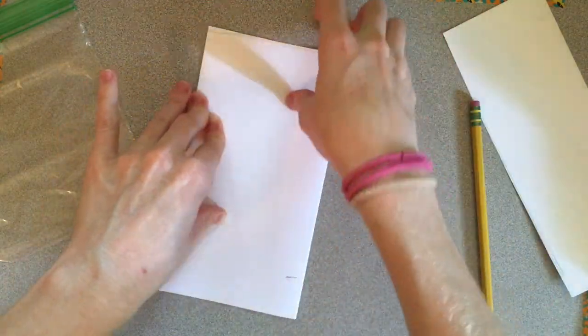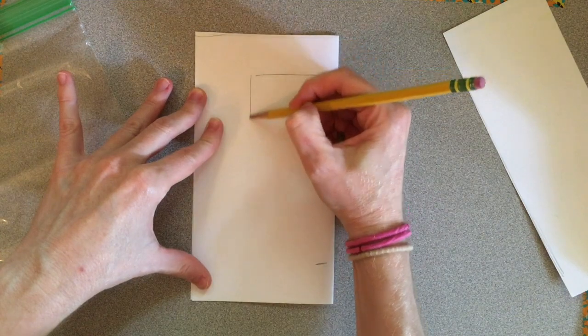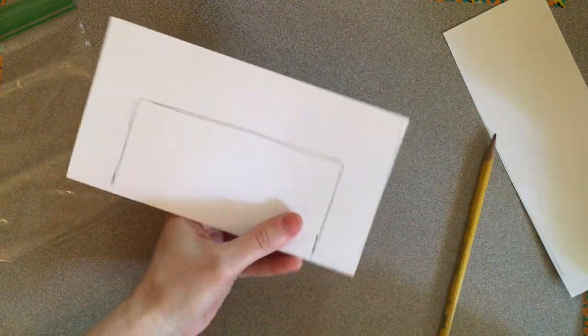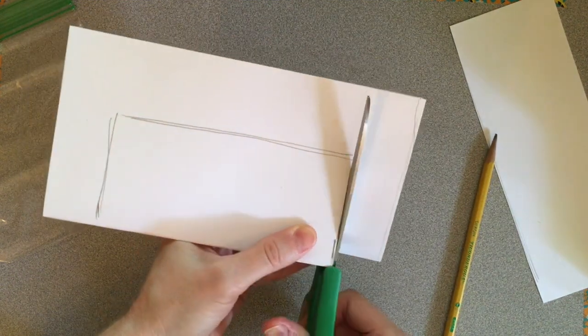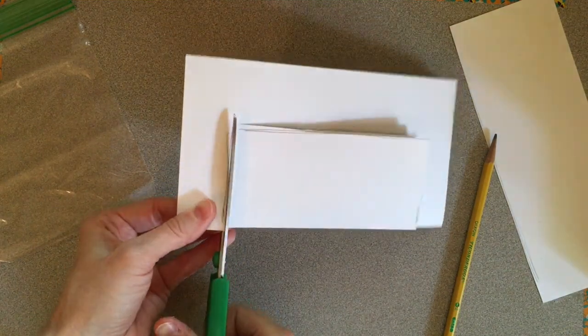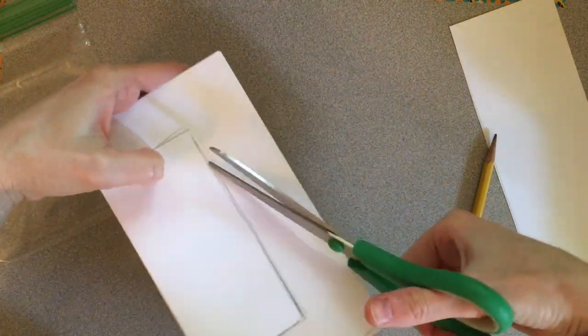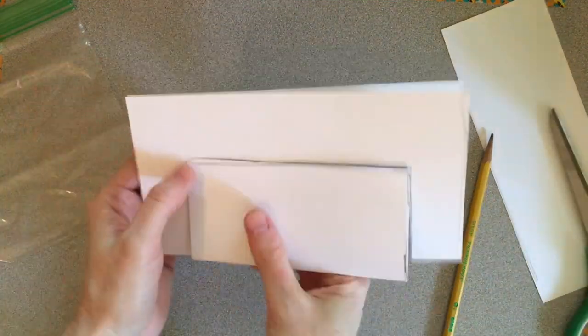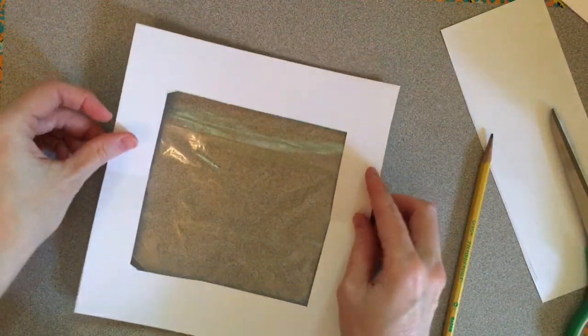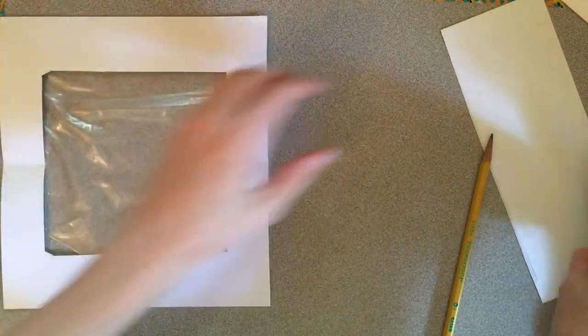And then we're going to cut out that window. The easiest way is to fold it in half, connect the two lines with a rectangle, and then cut those out. Very similar to folding paper to make a snowflake. When we're done cutting it out we can open it back up. Here's our window, fits right on the bag, and there's the base for the greenhouse.